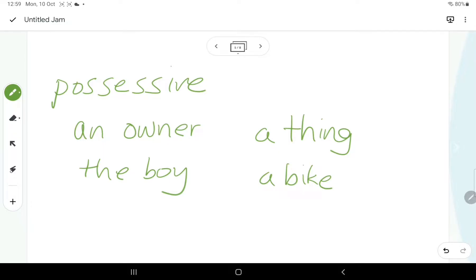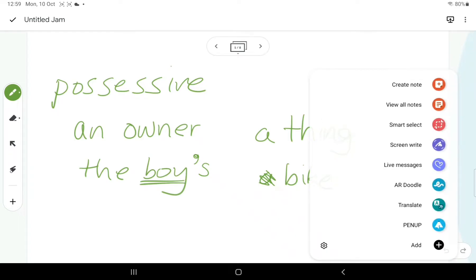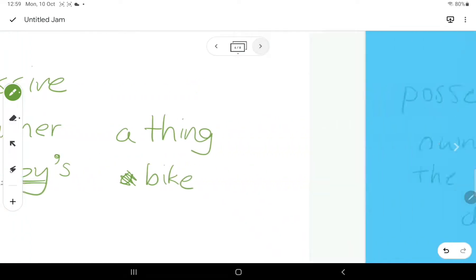Now, in order to convey the ownership of the bike, we need to identify who the owner is, and it's the boy. Then all we need to do is add an apostrophe and an S, and we've got the boy's bike. So, the possessive apostrophe always goes after the owner, and this applies even when you're doing plurals.